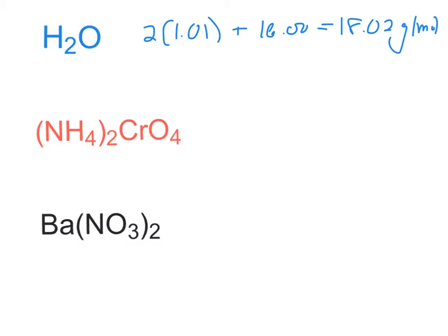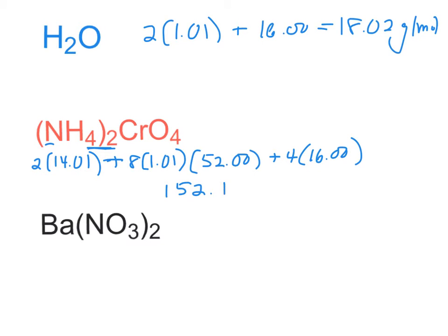Ammonium chromate: there's two nitrogens, and each one is 14.01, plus chromium, which is 52, plus 4 times oxygen, which is 16.00. So if we take all of that and we add it together, we get 152.10 grams per mole. That's the molar mass of ammonium chromate.